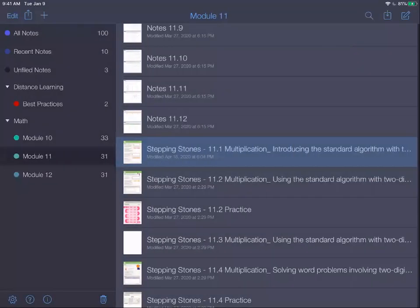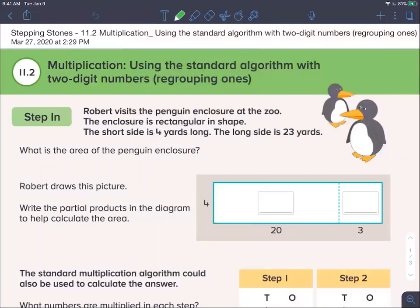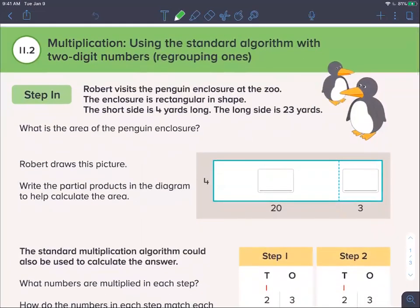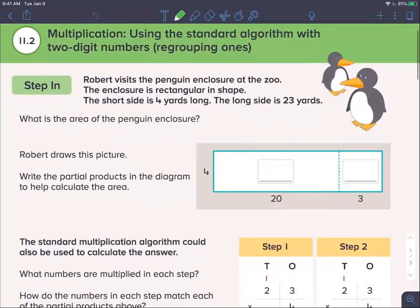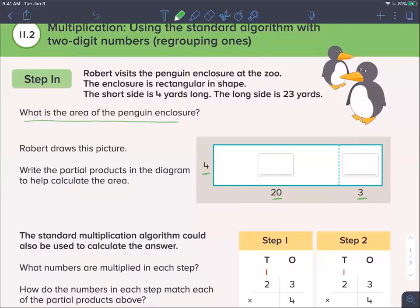Let's take a look at stepping stones 11.2. I know I'm including a lot of this in here, so you can always come back and rewatch this video or fast forward to the part that you need when you're doing 11.2. Very similar to 11.1, we have a word problem. Robert visits the penguin enclosure at the zoo. The enclosure is rectangular in shape. The short side is 4 yards long, and the long side is 23 yards. They've used expanded form. What is the area of the penguin enclosure? Area is multiplication. 4 times 20 is 80, and 4 times 3 is 12. If we were to add 80 plus 12, we would get 92.